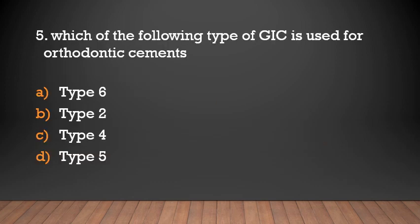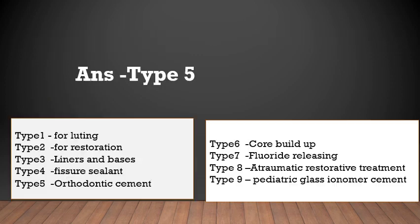Which type of GIC is used for orthodontic cement? (a) Type 6, (b) Type 2, (c) Type 4, (d) Type 5. Answer: Type 5.